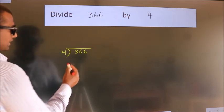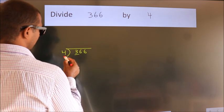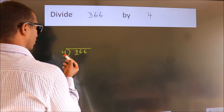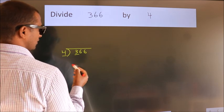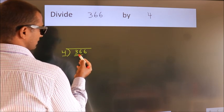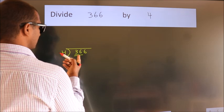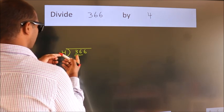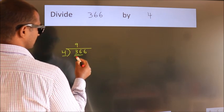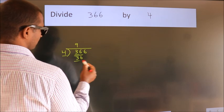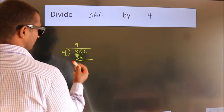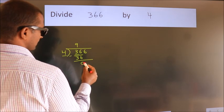Next, here we have 3, here 4. 3 is smaller than 4, so we should take 2 numbers: 36. When do we get 36? In the 4 table, 4 times 9 is 36. Now we should subtract. We get 0.